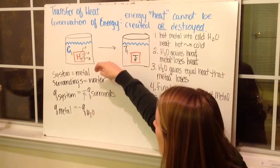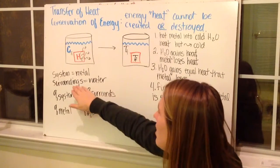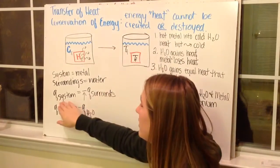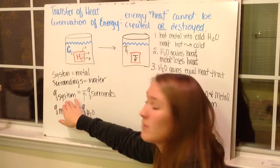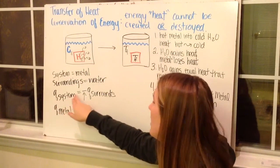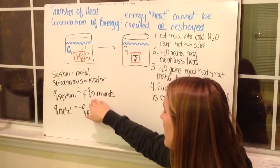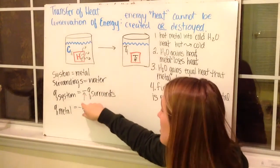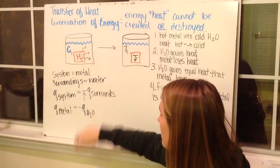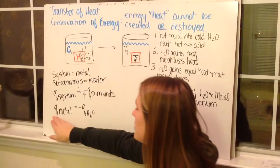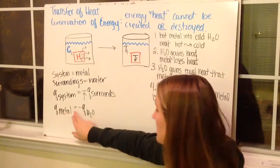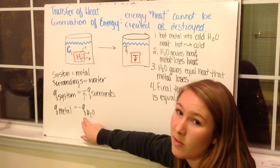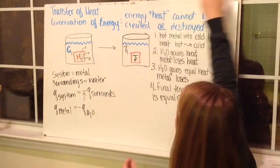We can call the metal the system and the water the surroundings. Therefore, the Q — the change in heat — of the system is equal in magnitude but opposite in sign to the Q of the surroundings. So the change in heat of the metal is equal and opposite to the change in heat of the water.